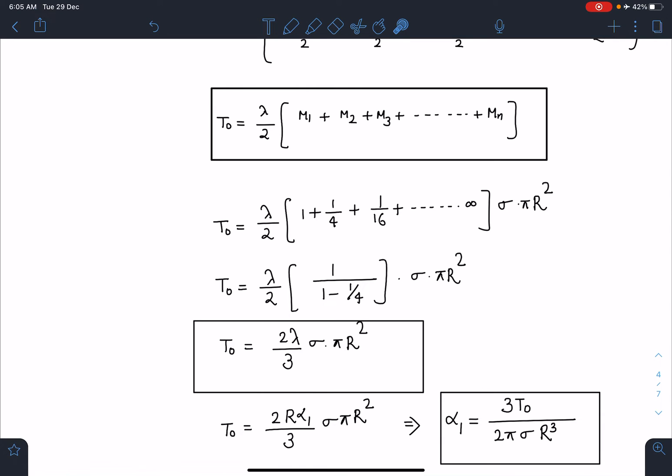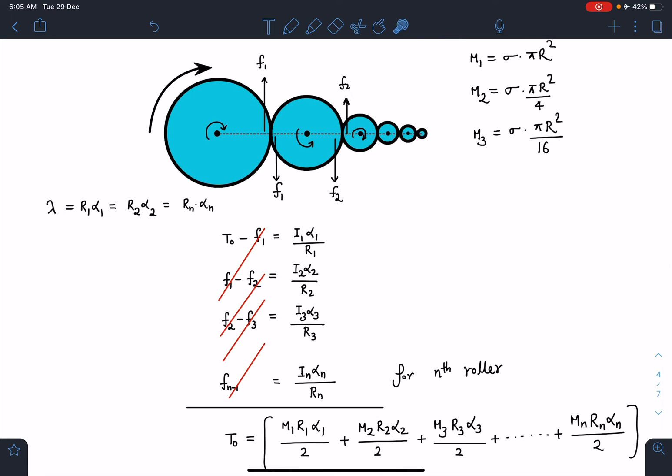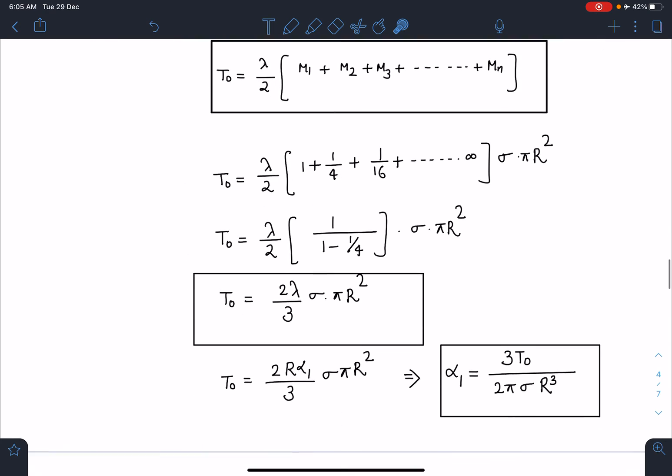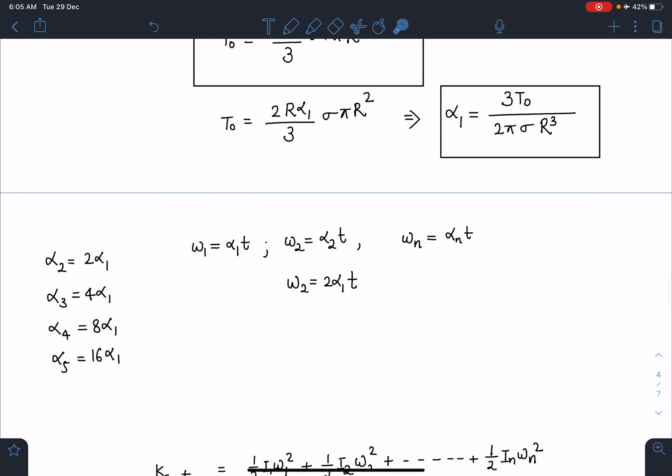Once I know α₁, then I know the values of α₂, α₃, α₄. All the alphas are known to me, so I can find out the angular velocity as a function of time. Angular velocity is simply ω = αt, because initially angular velocity was zero. We have α₂ = 2α₁, α₃ = 4α₁, and similarly for all other terms using the rα relation.